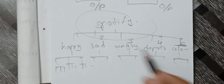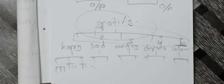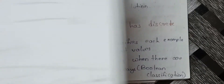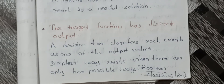So with five branches, the decision tree output becomes clumsy, untidy, and messy. Discrete Boolean classification is much easier — either yes or no, true or false.